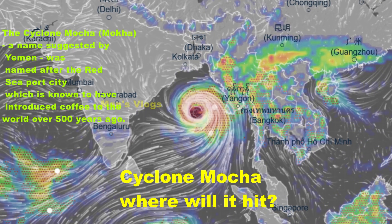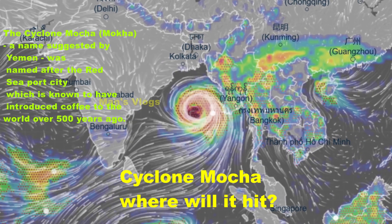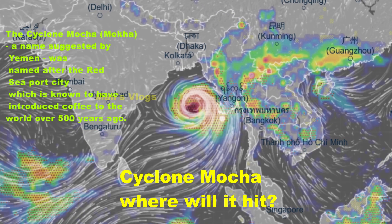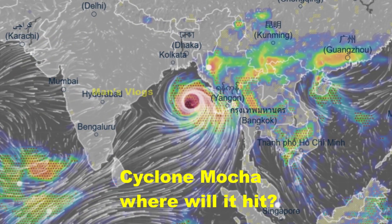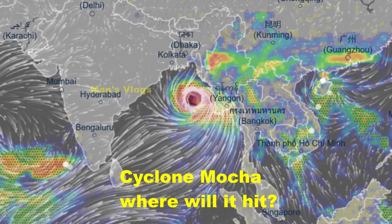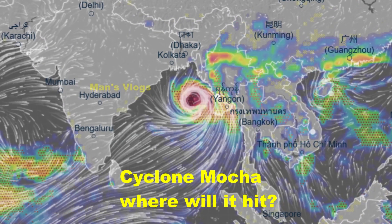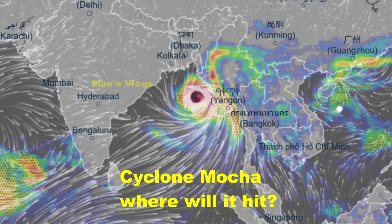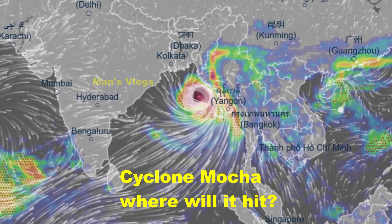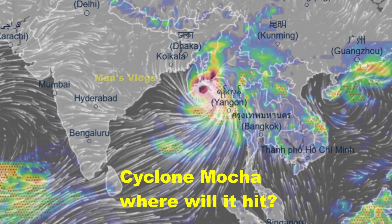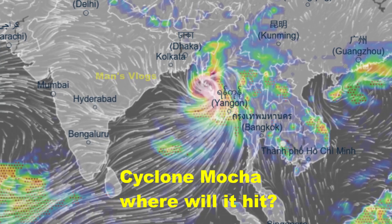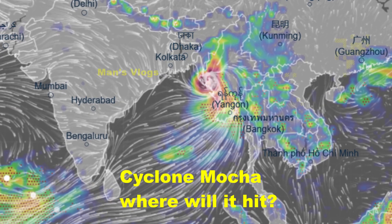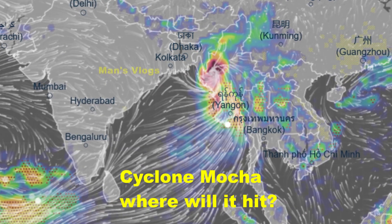When will Cyclone Mokha make landfall and where? The storm is expected to move towards the Bangladesh and Myanmar coasts around Sunday, 14th May, with the time of landfall and expected intensity tracked as it moves towards the coast.